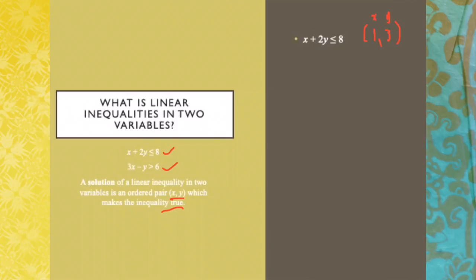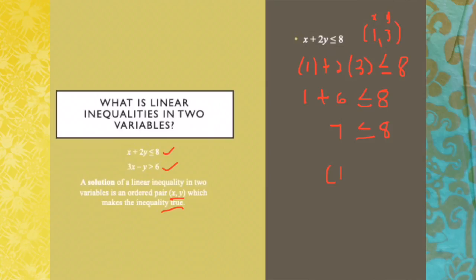We will substitute the values (1, 3) in our linear inequality. That means 1 plus 2 times 3 less than or equal to 8. 1 plus 2 times 3 is 6, less than or equal to 8. 1 plus 6 is 7, which is less than 8. Therefore, (1, 3) is part of the solution set of x plus 2y less than or equal to 8.